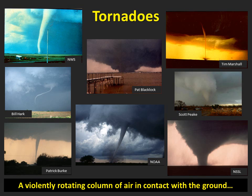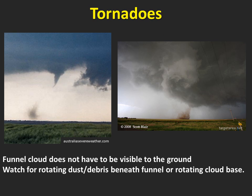Surely you've seen many pictures and videos of tornadoes. The definition of a tornado is a violently rotating column of air in contact with the ground and extending down from a thunderstorm cloud. Just like wall clouds, tornadoes can appear in many different shapes, sizes, and even different colors. There are two things that make a tornado visible: a condensation funnel which extends down from the storm, and dust and debris kicked up from the ground.